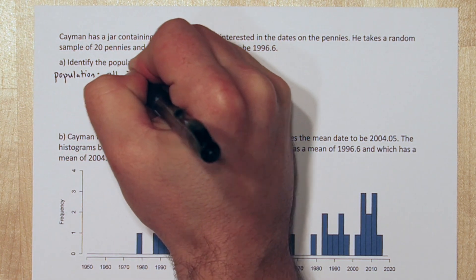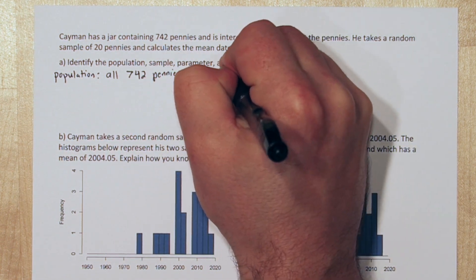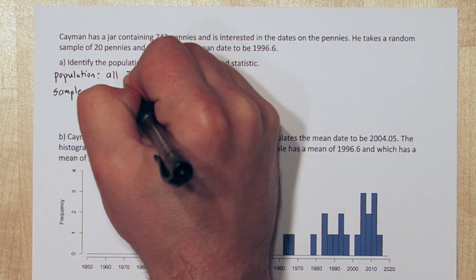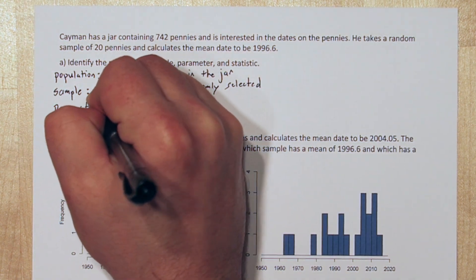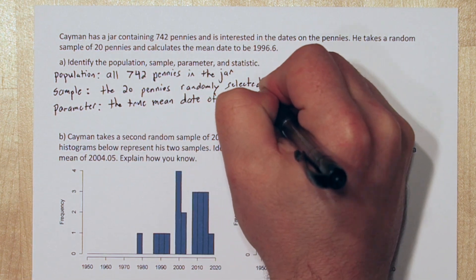The population is all 742 pennies in the jar. The sample is the 20 pennies that were randomly selected. The parameter is the true mean date of all 742 pennies in the jar.